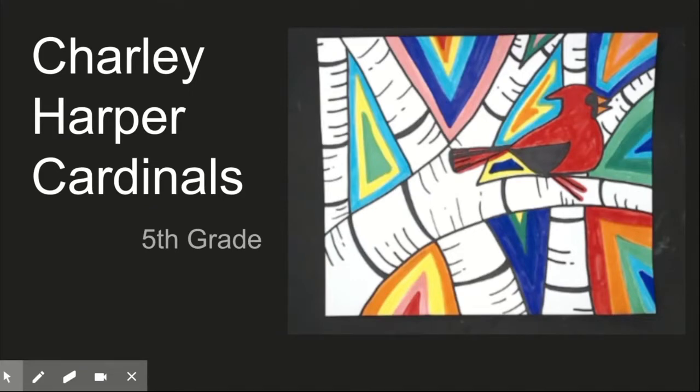Last class, we worked on our positive space. The positive space items would be the tree branches and our cardinal. The negative space is the space created in between those positive things. So today, we are going to be working on filling in our negative space with color.